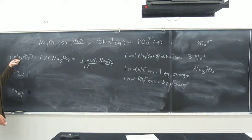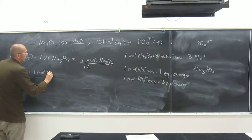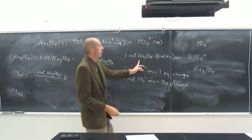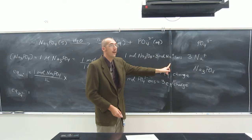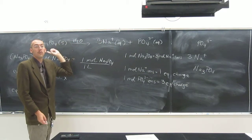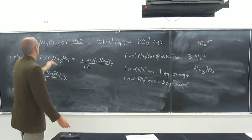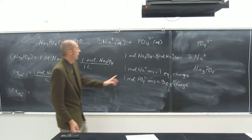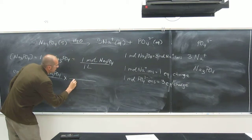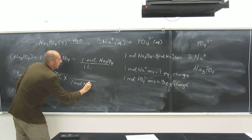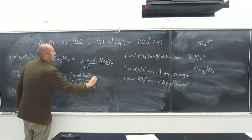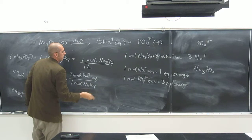To figure out the equivalents of sodium ions, we have to know the concentration of sodium phosphate to begin with — one mole of sodium phosphate per liter of solution. We also know the number of moles of sodium phosphate to moles of sodium ions from the reaction equation. So the conversion factor is: one mole sodium phosphate on the bottom, three moles sodium ions on the top.